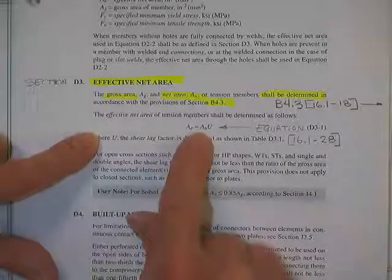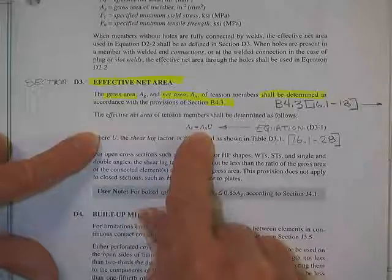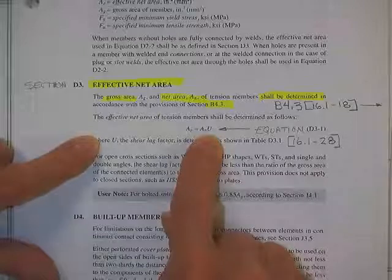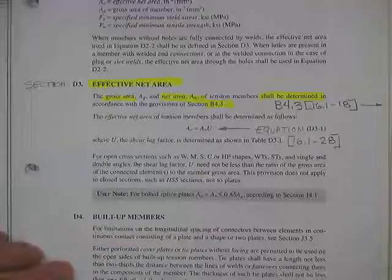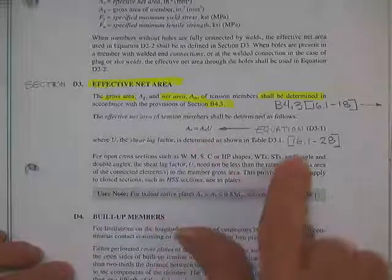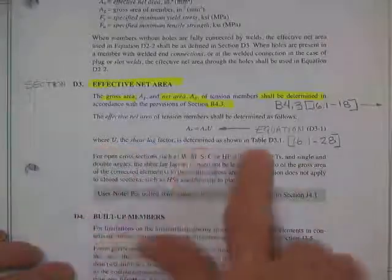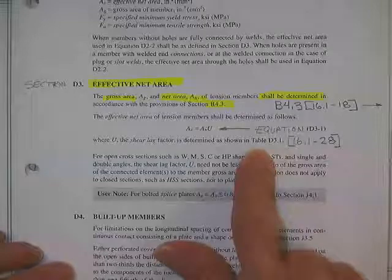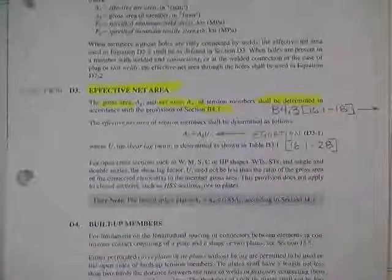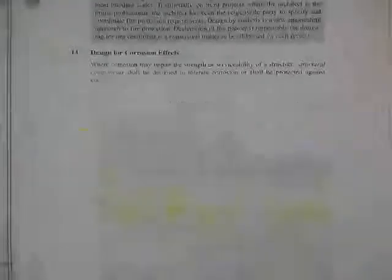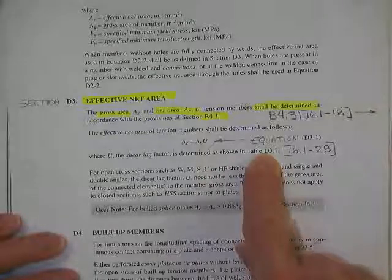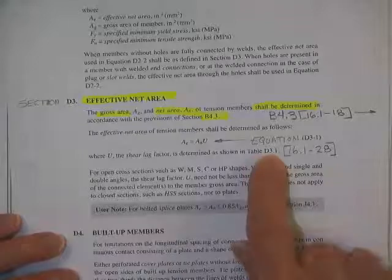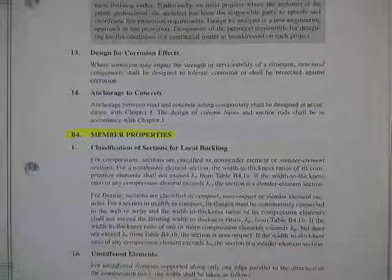What is A sub E? It's an effective area according to this. Here it says, how do you calculate effective net area? It says to get the area effective, you multiply the net area, that's including the fact that there's some holes missing, times a thing called U. And where are you going to get U? My book is on a tab. U is called the shear lag factor determined in table D3.1.